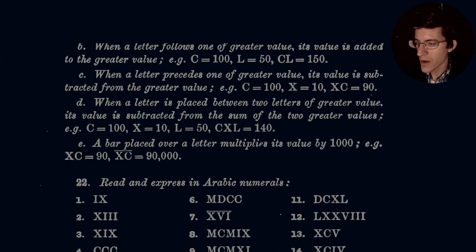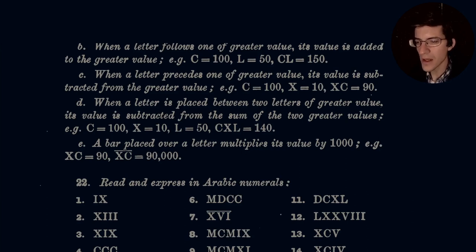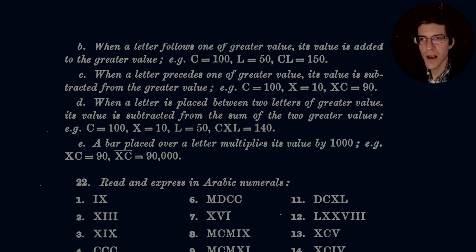When a letter is placed between two letters of greater value, its value is subtracted from the sum of the two greater values. Therefore, if we have C being 100, X being 10, and L being 50, if we have CXL, we take C and L, add them together to get 150, and then put the X in between and subtract 10 away from that value. The other way to look at it is that we read these numbers from left to right. Our left-hand value is always going to be the greatest value, and we will always look even further to the left-hand side to see how to modify it.